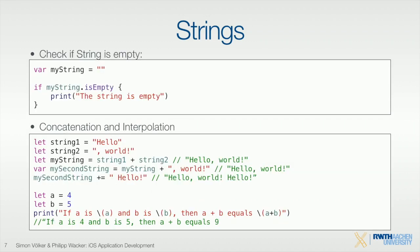Strings can be empty — not nil. If you want a nil option, you'll need to use an optional. But if you want a string that is empty, there's just nothing in there, and you can check for isEmpty.